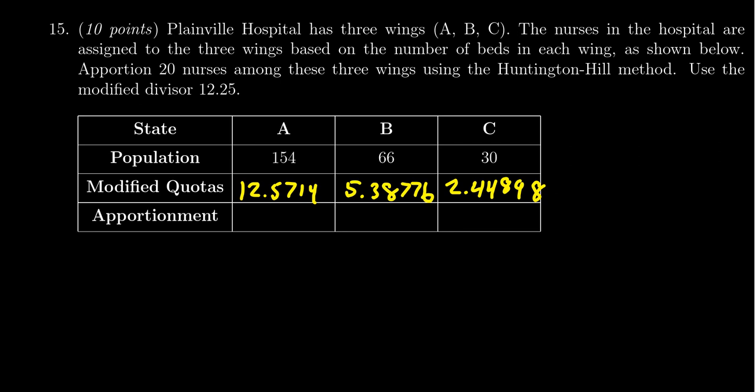So now with the Huntington Hill method we round the quotas up or down based upon whether they're larger or smaller than the geometric mean. The geometric mean does compare to the arithmetic mean - the 0.5 rule comes into effect. If your decimal place is 0.5 or bigger than your geometric mean, you're going to round up, so 12.5 rounds up to 13.